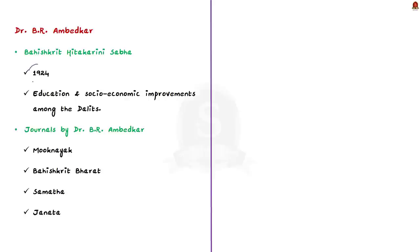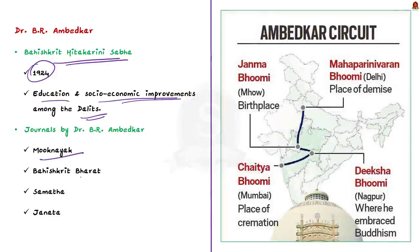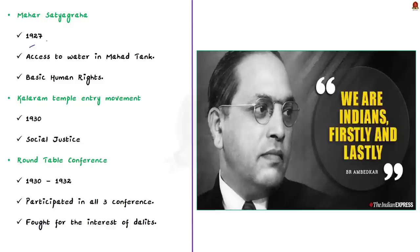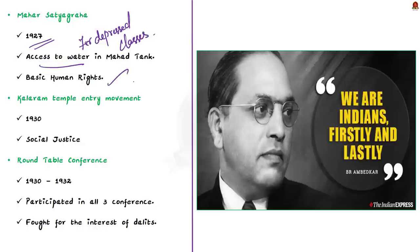In 1924, Ambedkar started Bahishkrit Hitakarini Sabha to promote education and socio-economic improvements among the Dalits. Ambedkar also started several journals for empowering the so-called depressed class — including Mooknayak, Bahishkrit Bharat, Samata, and Janata. Then in 1927, he organized the Mahad Satyagraha, to ensure people from the depressed classes have access to water from the Mahad water tank — through which he tried to ensure basic human rights. Then in 1930, he organized a temple entry movement at the Kalaram temple at Nashik to ensure social justice.